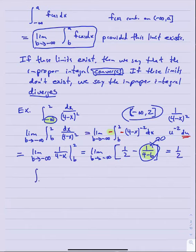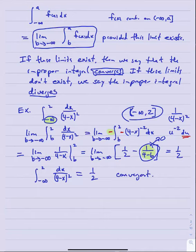Therefore, the integral from -∞ to 2 of 1/(4 - x²) dx equals 1/2. I will call this a convergent improper integral with a value of 1/2.